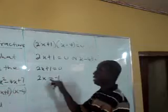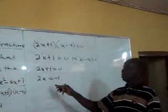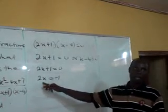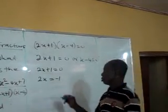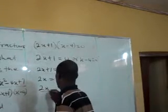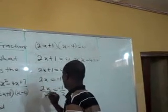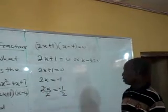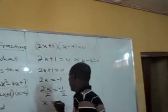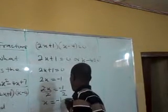So you now divide both sides by the coefficient of x, which is 2. You have 2x divided by 2 equals to minus 1 divided by 2. Then x, therefore, will be minus 1 over 2.